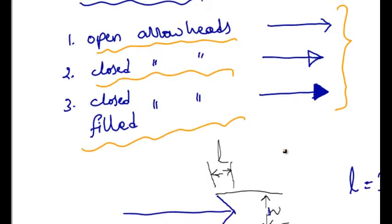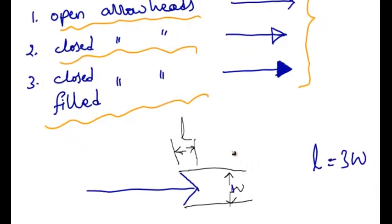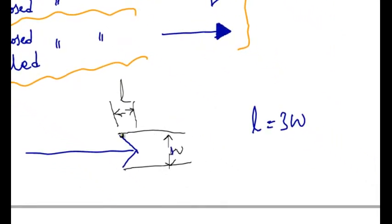Generally, an open arrowhead is preferred for most of the drawings. The length of the arrowhead is taken three times the width. That is, the length of the arrowhead is taken three times the width of the arrowhead.